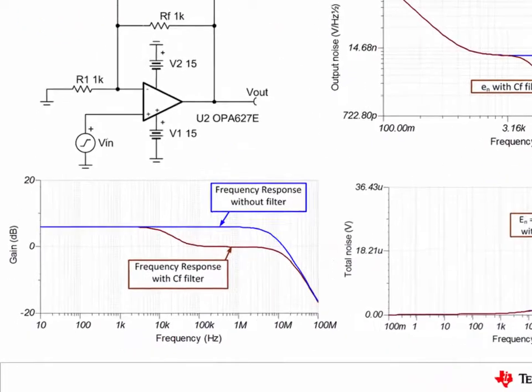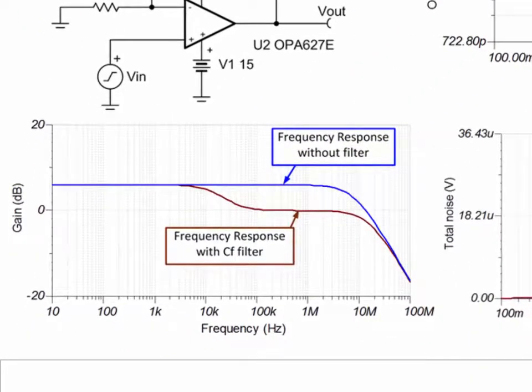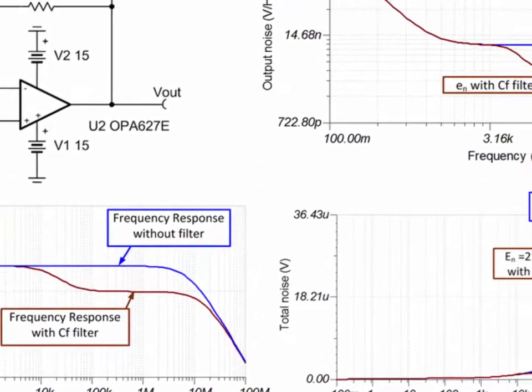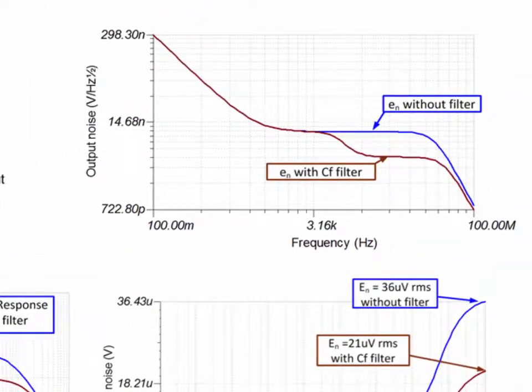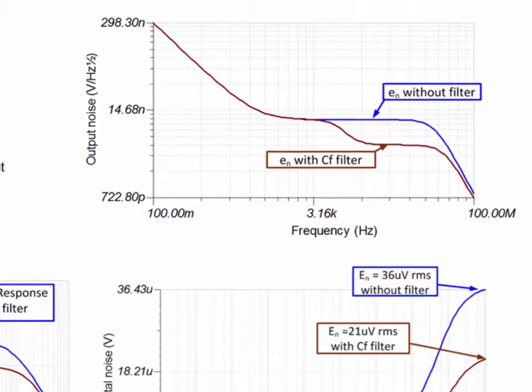In this example, the closed-loop gain is only 2 volts per volt, or 6 dB. The filter behaves in the same way, except that the effective attenuation when the capacitor is acting like a short is now only 6 dB. In general, this type of filter will reduce the gain from the DC gain down to a gain of 1 volts per volt. Thus, this filter is most effective for circuits with high gain. Looking at the spectral density curve on the top right, you can see the noise reduction from the filter occurs in the broadband region.